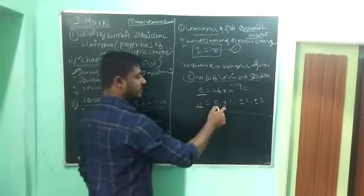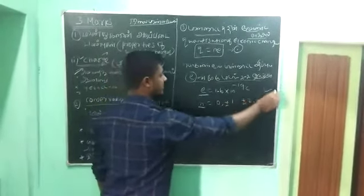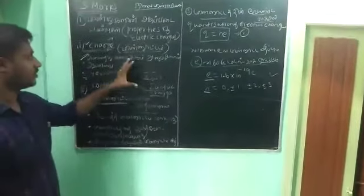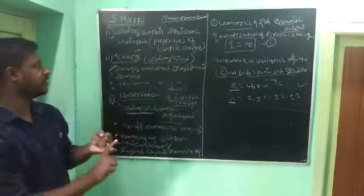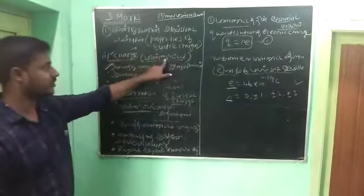N equals 0, plus or minus 1, plus or minus 2, plus or minus 3, and so on.